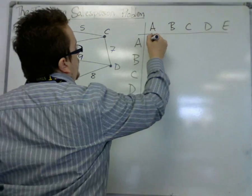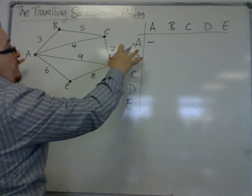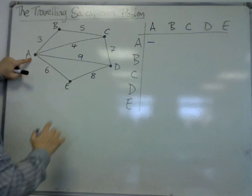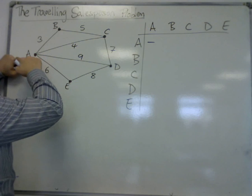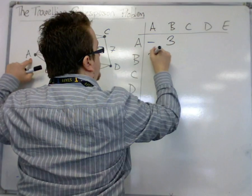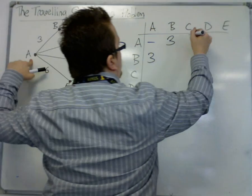A cannot be connected to itself. A to B, the shortest route, and it's always going to be the shortest route between any of the vertices and any other vertex. So A to B is 3 because the next one would be 9. A to C is 4. There's an 8 there, but 4 is the best.